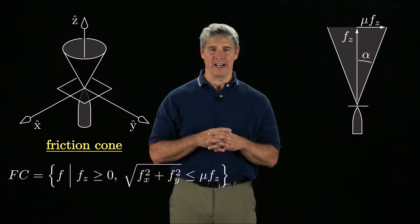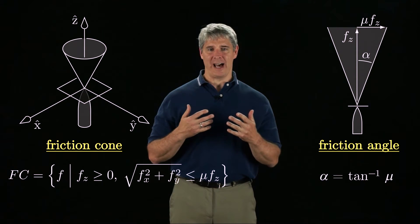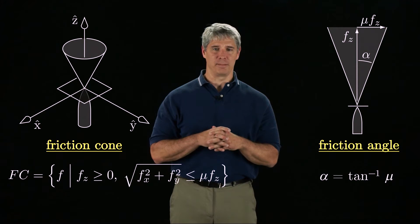Looking at this cone from the side, we define the friction angle alpha, which is the inverse tangent of mu.